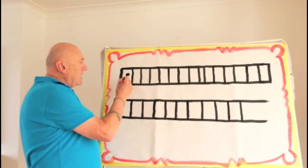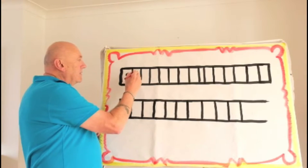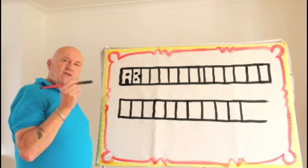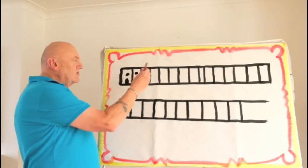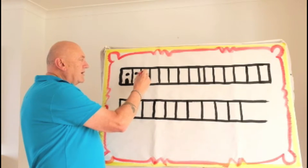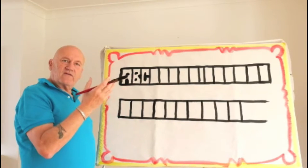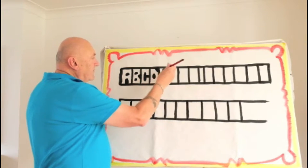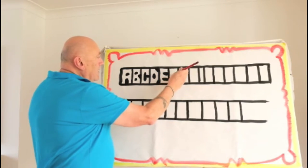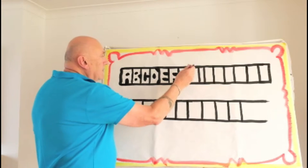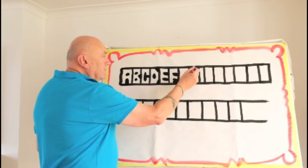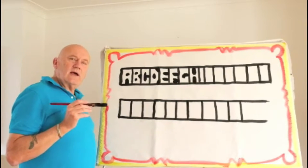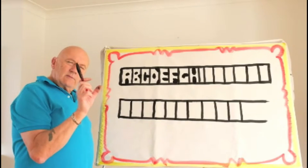So here's how we do it: A, B — and you try to use as few strokes as possible. The fewer strokes you use, the quicker and the more magical the effect is as it kind of jumps out. So A, B, C — just take the corners off — D, E, F, G, H.